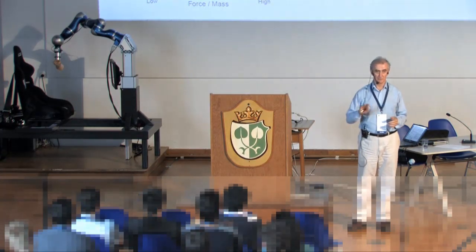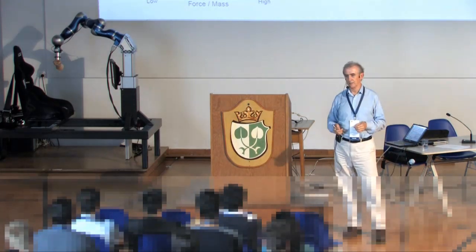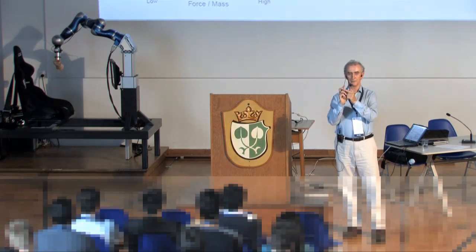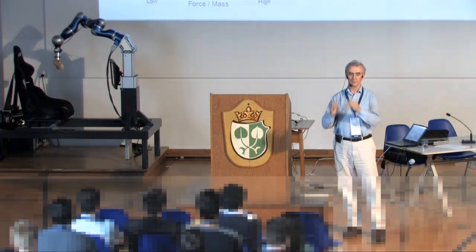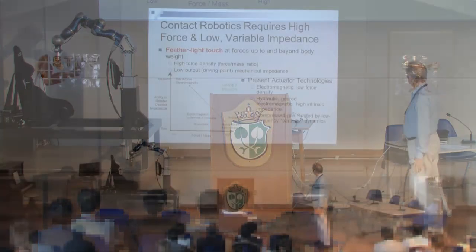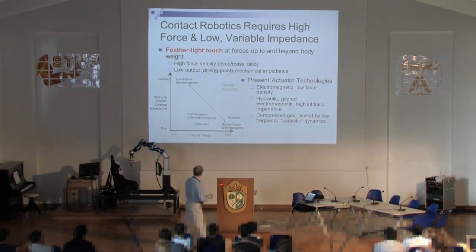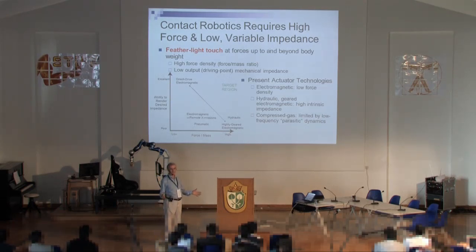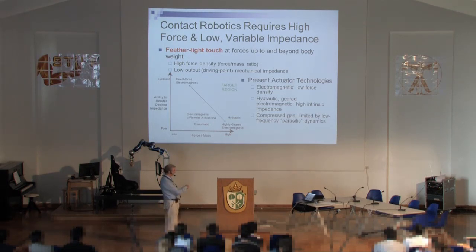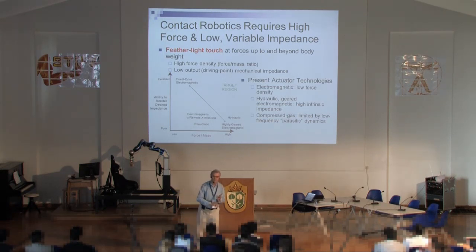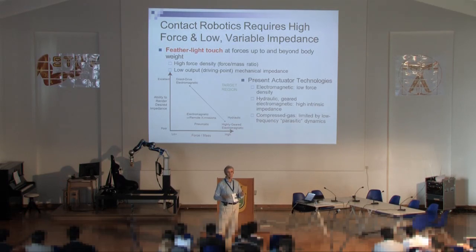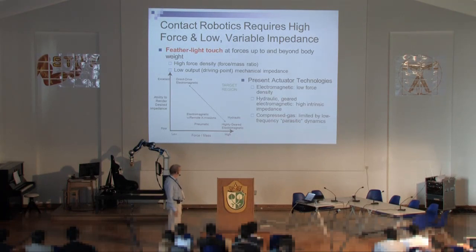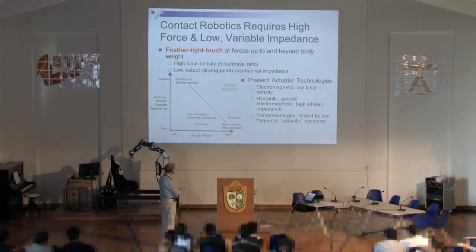We'd like to support up to the full body weight of a human — generating forces on the order of 80 to 100 kilos or more — while maintaining very low variable impedance. With electromechanical actuators, adding gears improves force generation but multiplies parasitic dynamics — effective viscosity, friction, and inertia — by the square of the gear ratio, giving poor ability to render impedance. Hydraulics offer excellent force-to-mass ratio but very high impedance. Remote transmissions and pneumatics are also not very impressive so far.